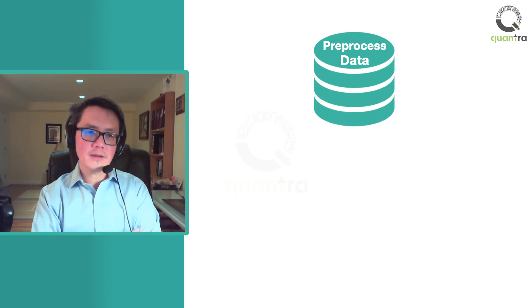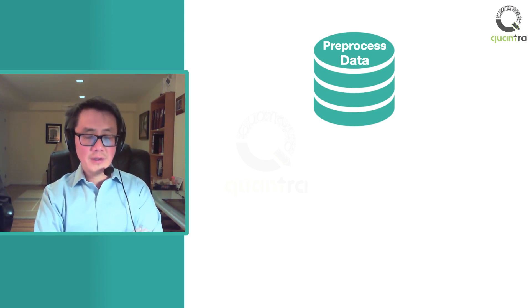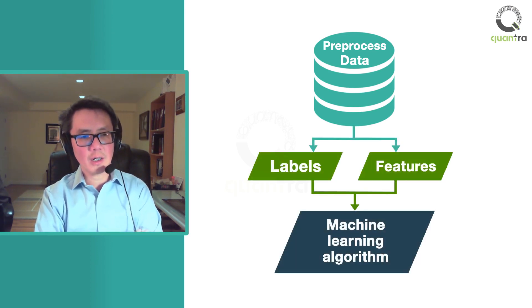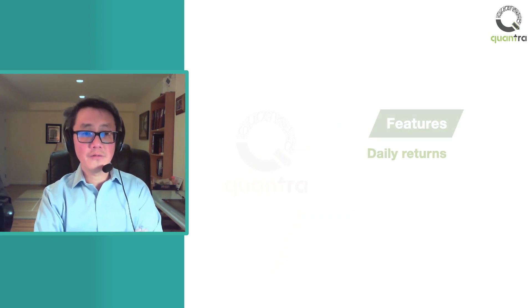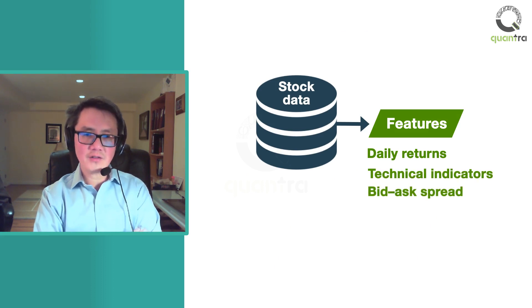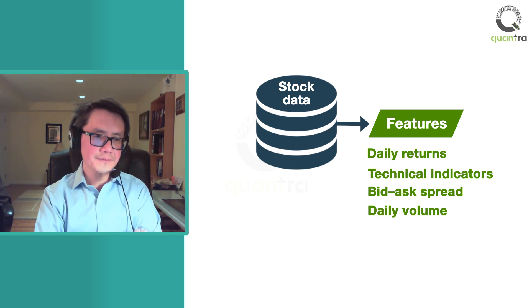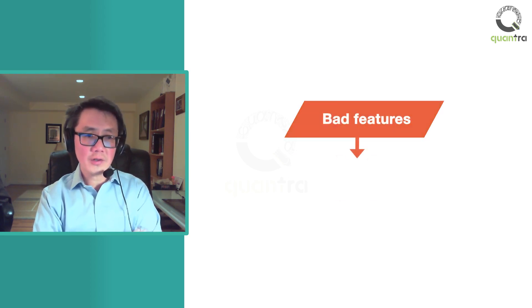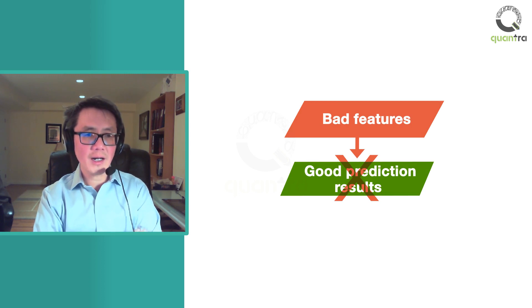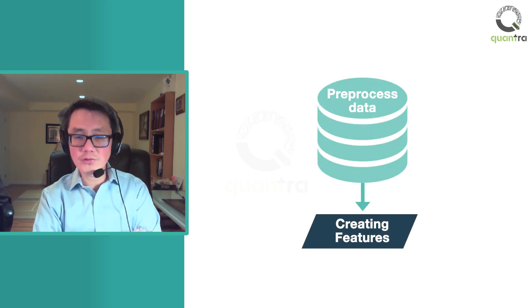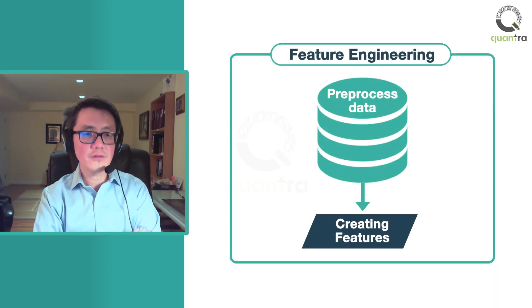After pre-processing the data, you can use it for analysis. The pre-processed data is used to create features and labels that are fed to machine learning algorithms. Features can be daily returns of the stock data, technical indicators, bid-ask spread, daily volume, and so forth. The features should represent the factors which affect the prediction outcomes. If you create bad features, you won't get good prediction results, no matter how great your machine learning algorithm is. The process of creating features using the pre-processed data is called feature engineering.